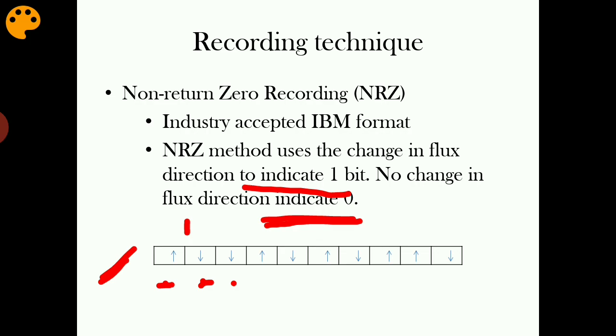If we compare the second unit and the third unit, there is no change in flux direction, so those two units represent a bit zero. The third and fourth units correspond to a bit one because there is a change in flux direction. Similarly, the fourth and fifth unit have a change in flux. That means a bit one is encoded there.